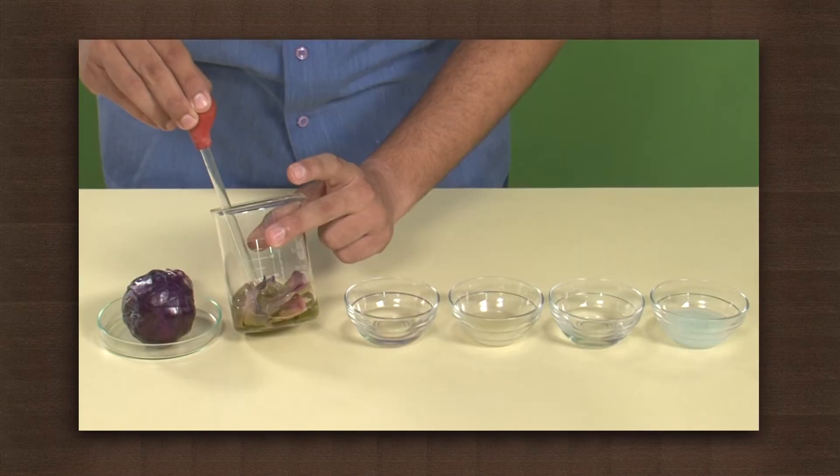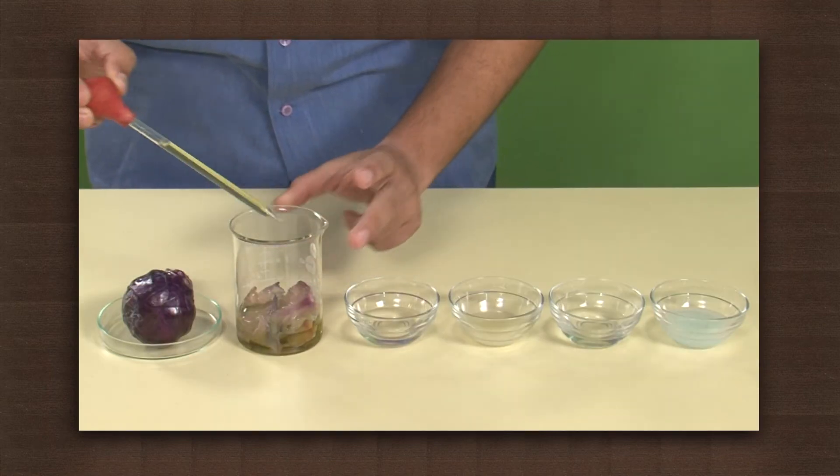Once you have the pigment, add it to the four bowls that contain acids and bases.